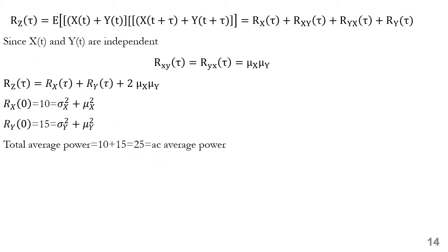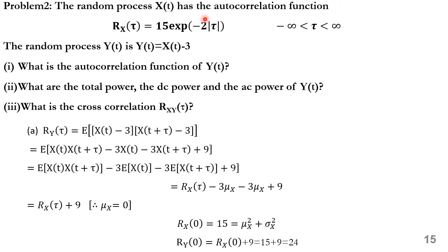Problem 2: The random process x(t) has autocorrelation R_x(τ) = 16·e^(−2|τ|) for −∞ < τ < ∞. The random process y(t) is defined as y(t) = x(t) − 3. Find the autocorrelation of y(t), its total power, DC power, AC power, and the cross-correlation R_xy(τ). R_y(τ) = E[y(t)·y(t+τ)] = E[(x(t)−3)·(x(t+τ)−3)] = E[x(t)·x(t+τ) − 3x(t) − 3x(t+τ) + 9].